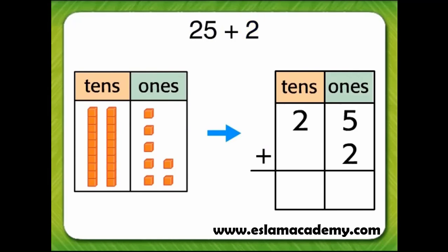Next, add the ones. Two ones plus five ones equals seven ones. There are seven ones in all.